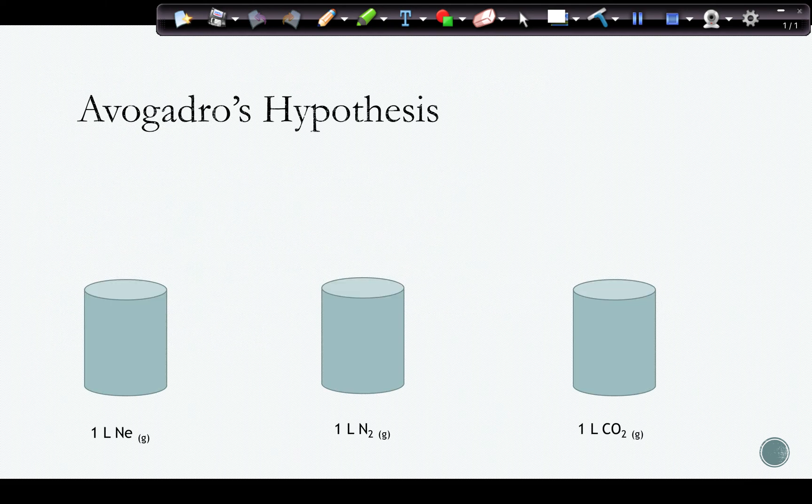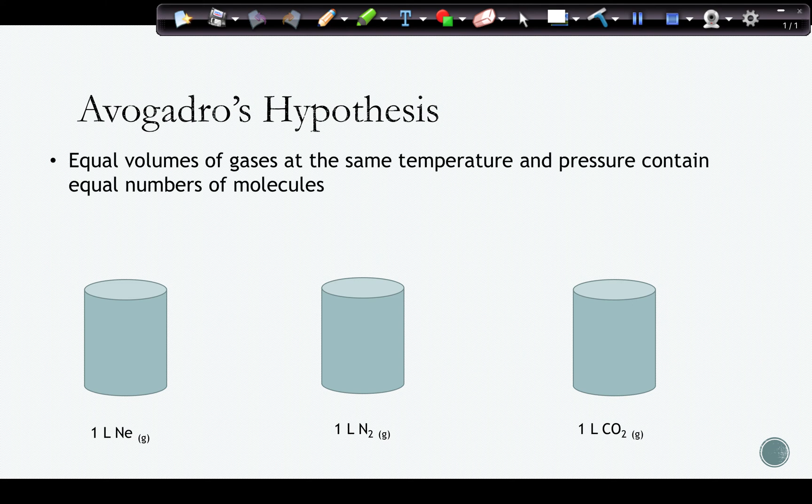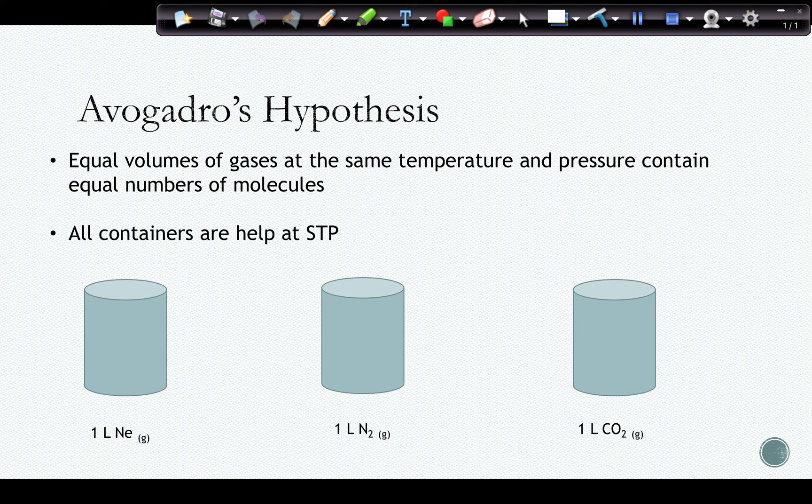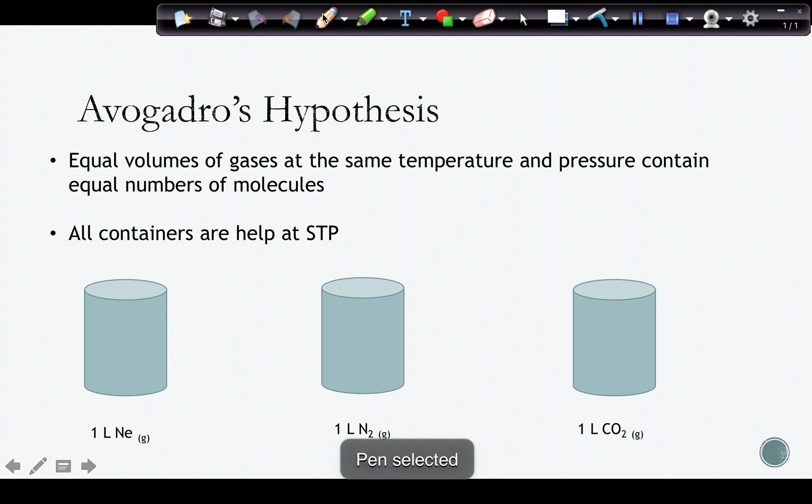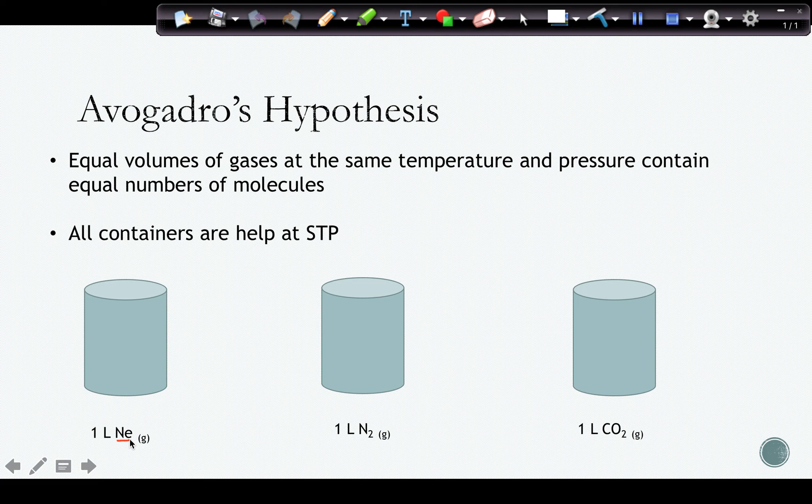We also have Avogadro's hypothesis, which states that equal volumes of gases, if held at the same temperature and pressure, contain equal numbers of molecules. So if all of these containers are held at STP, then each of these containers would contain the same number of molecules. We're not talking about individual atoms because neon here only has one atom per molecule, nitrogen has two atoms per molecule, and carbon dioxide has three atoms per molecule. But we're talking about the number of molecules. So if they're at the same temperature and pressure and they have the same volume, equal numbers of molecules will be found in each of those containers.